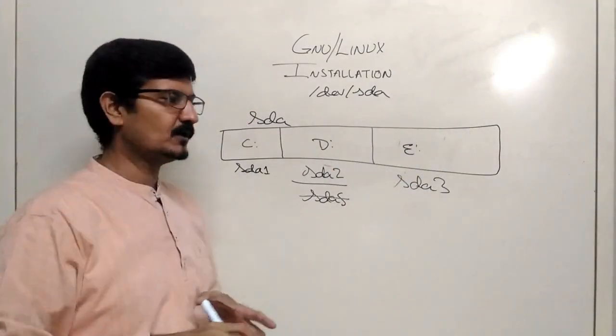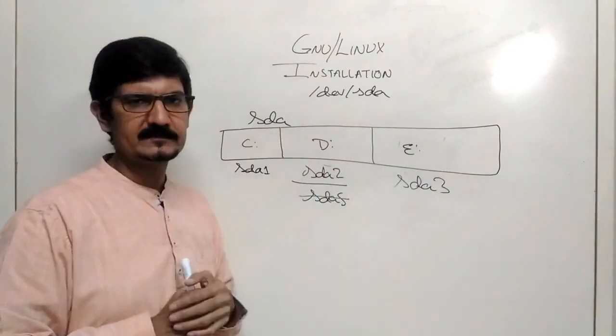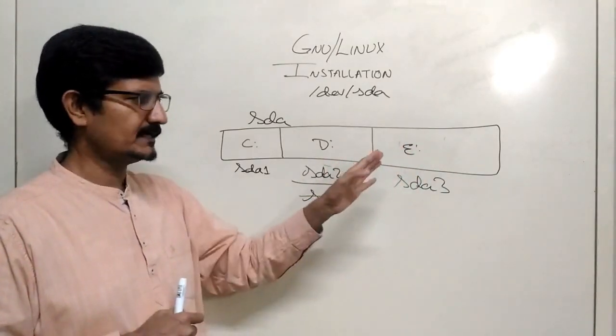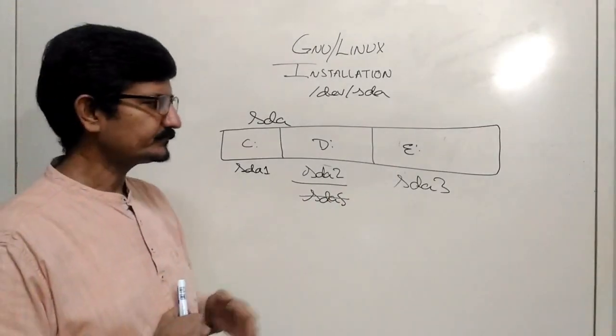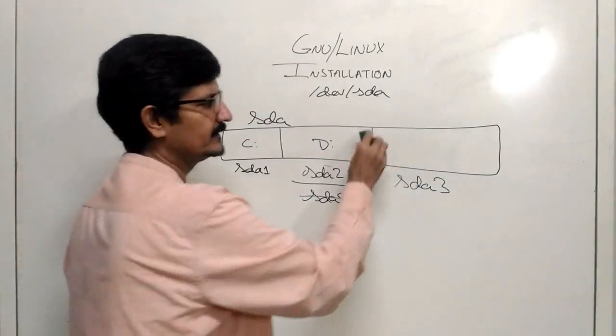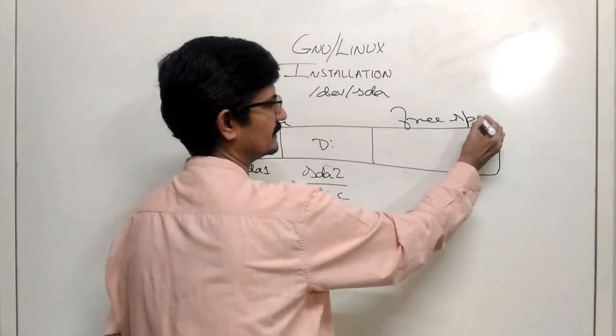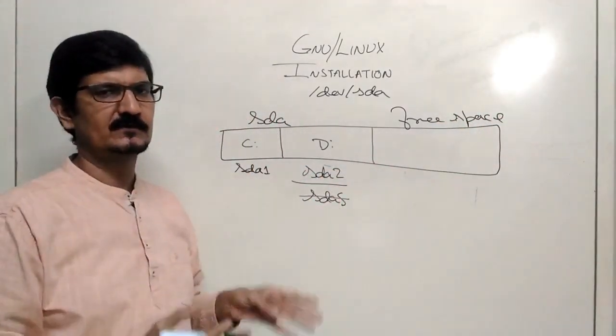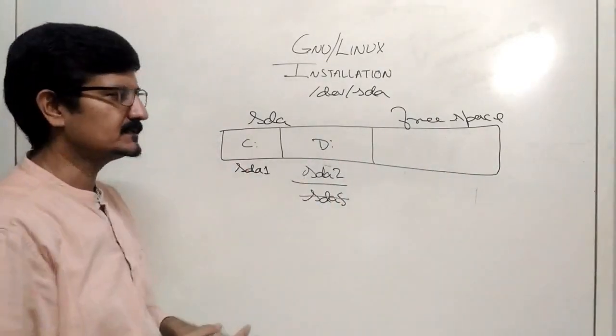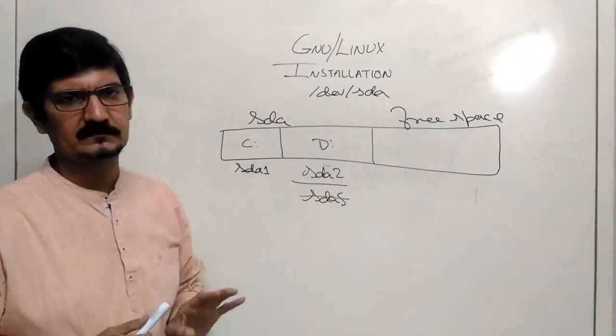Now before installing either you use some tool in Windows and resize or delete this partition to make enough space available. You need to clear off the data on this. Windows has some utility with which you can resize it. Once you have resized the partition, we will have enough of space. So either if you have deleted this partition this will be our free space. And this is what we are going to use for installation.